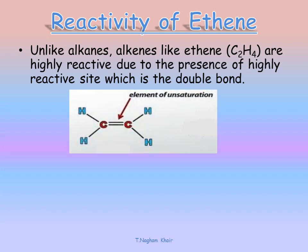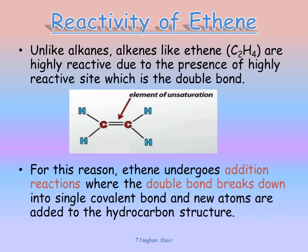The double bond is an unsaturated site, so it makes the alkene molecule highly reactive. Reaction occurs by a specific mechanism. For this reason, ethene undergoes addition reactions where the double bond breaks down into a single covalent bond and new atoms are added to the hydrocarbon structure.